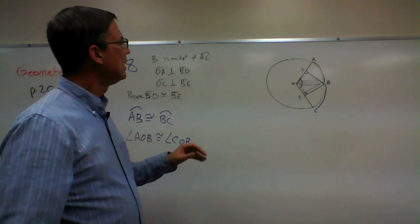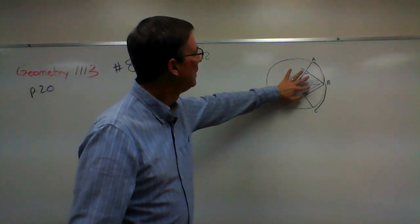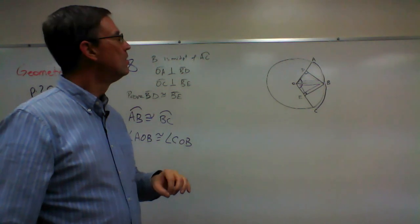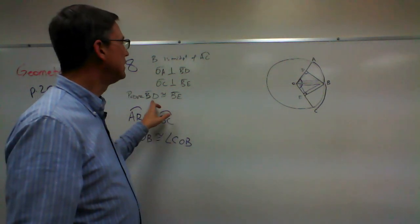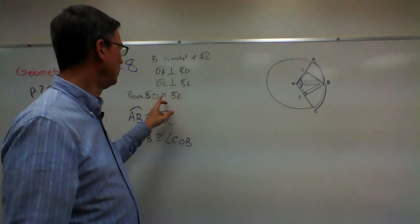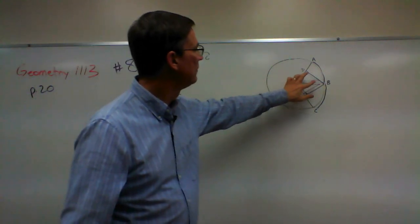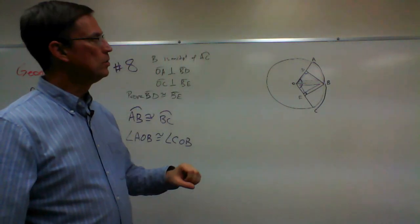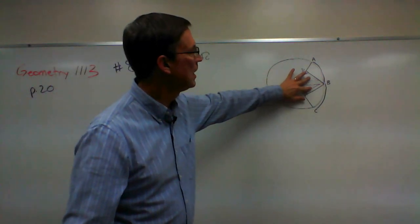Now if I can prove that these two triangles are congruent, then I can say that these corresponding parts are congruent. Because BD corresponds to BE on those two triangles that we kind of have highlighted there.